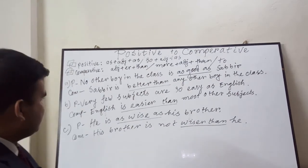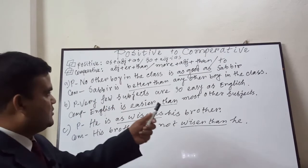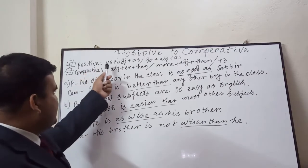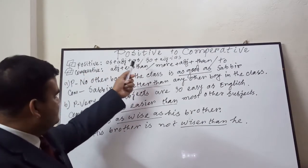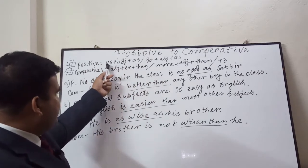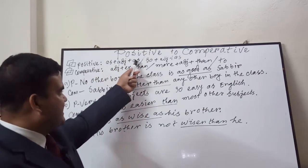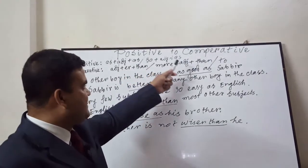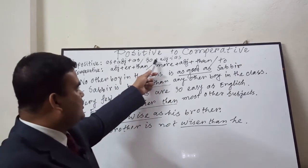So today I will go through some gist before analyzing the rules. The gist of positive is: as + adjective + as. For example, if the adjective is 'good', it will be 'as good as'. Or it can be: so + adjective + as — it can be 'so good as'.